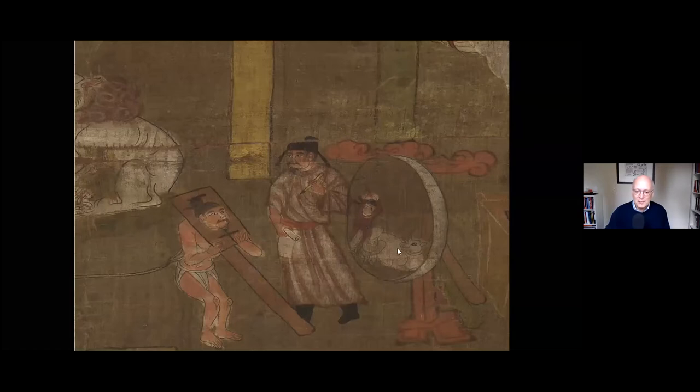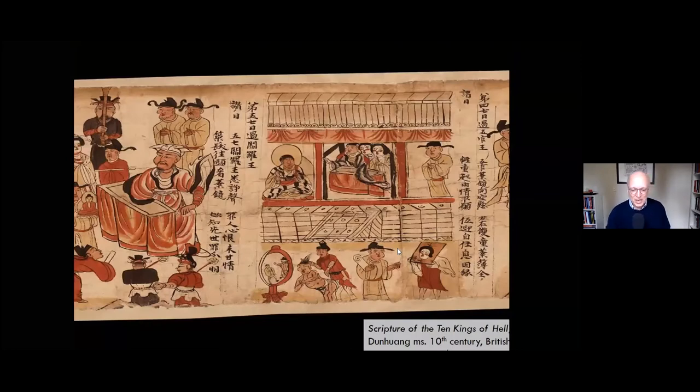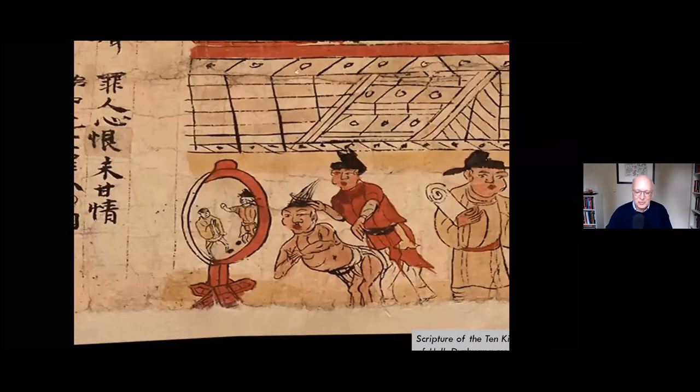This is an example here. The karmic mirror is my favorite piece of furniture in the netherworld. After you die, you're taken to the court of the ten kings, and before judgment you're led to a mirror. When you look in it, you see significant events of your life and must confront your past. For these figures, the future does not look bright.